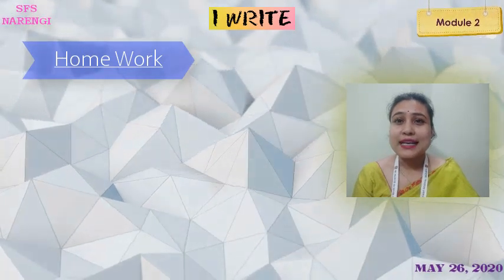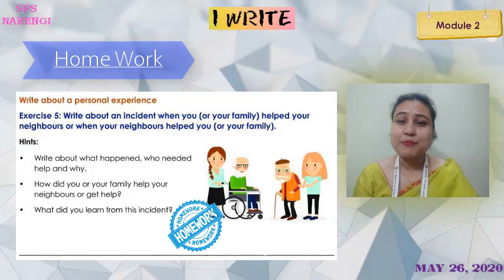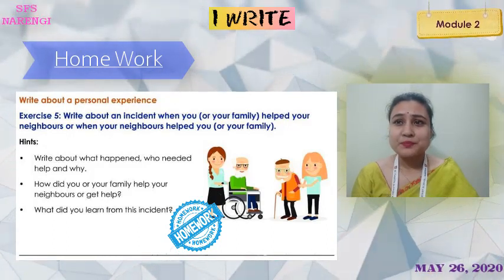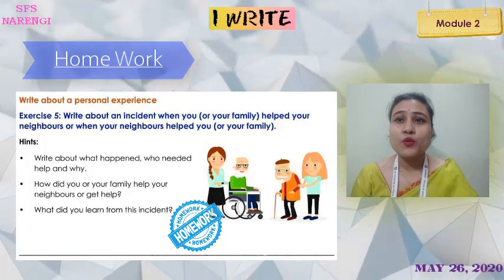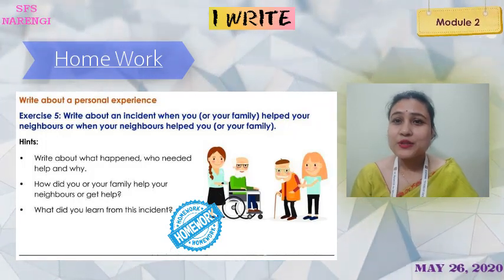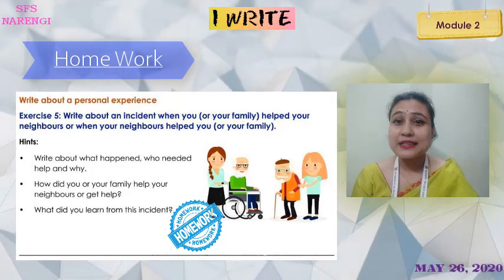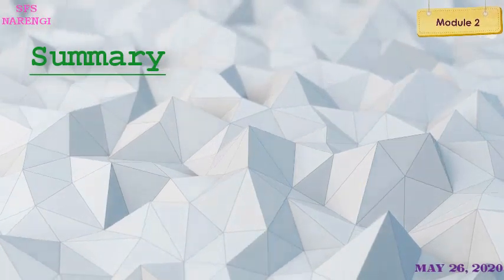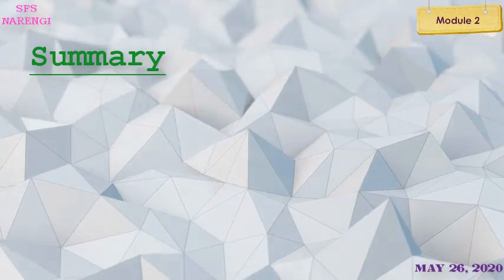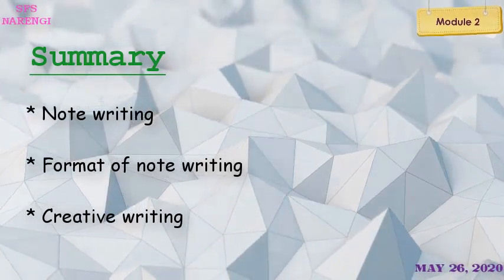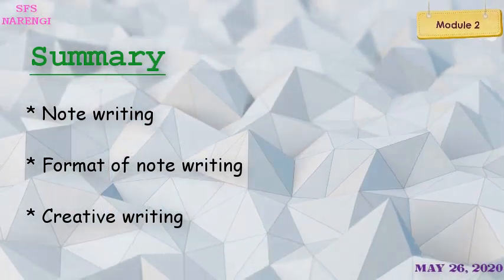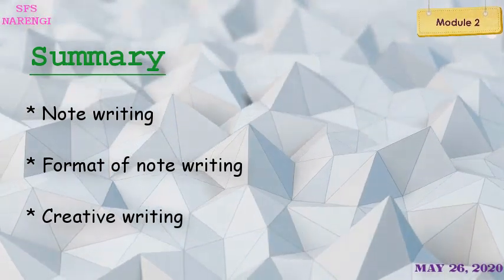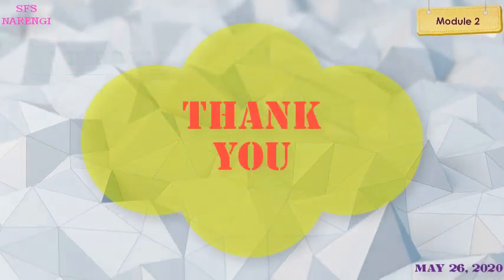Today's homework for you all is exercise 5. In this exercise, you have to write down a personal experience where you or your family helped your neighbors, or when your neighbors helped you. Write about that incident as your personal experience. Now it's time to wrap up. To summarize what we have learned today: we learned about note writing, the format of note writing, and creative writing. If there is any confusion regarding the topics, you can call or text me, and we can revisit the topics in our next class. Thank you.